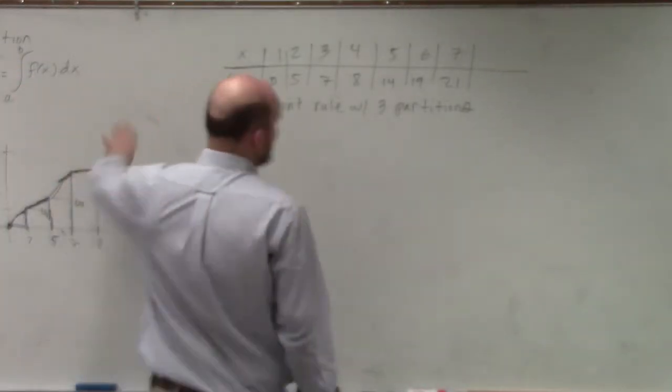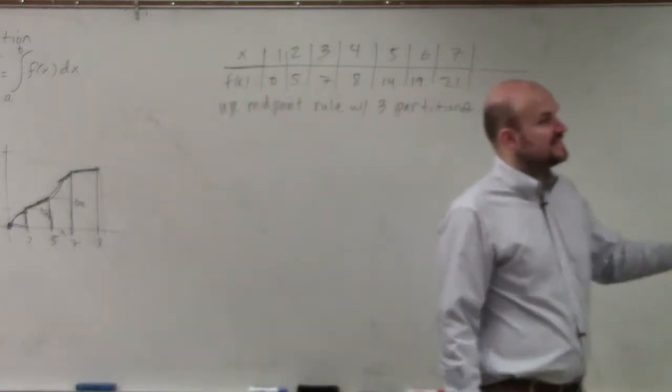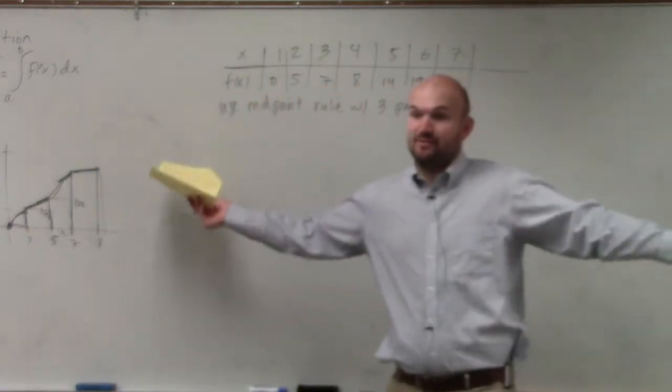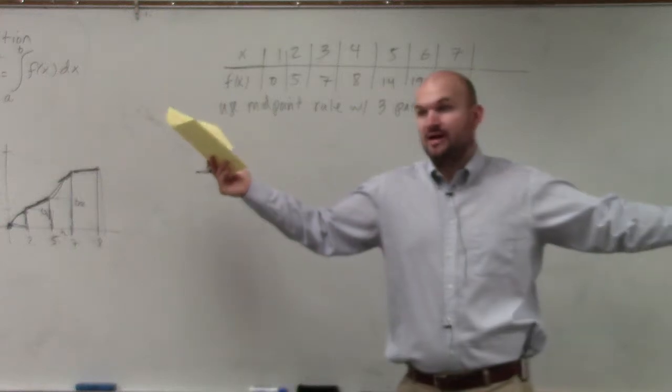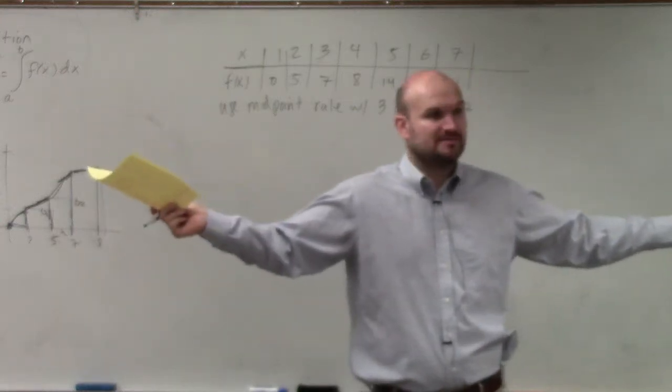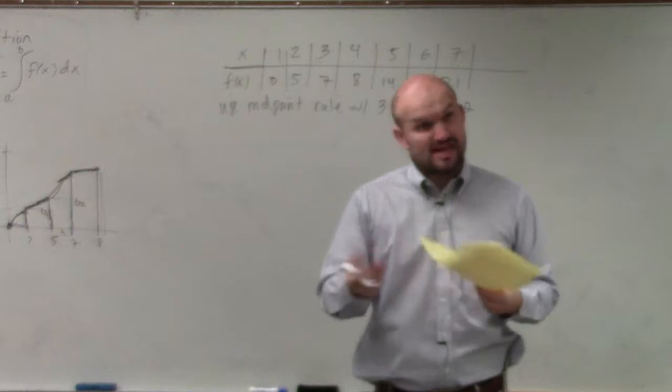So if you guys remember, remember how I kind of threw a wrench in those last two examples we did today? I said, you're evaluating from 0 to 3, but I want six partitions, right? Or I want six rectangles, correct? So that changes things.